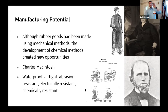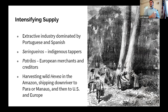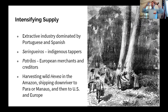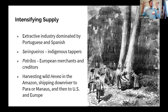As demand began to rise in these major manufacturing centers — Macintosh based in Manchester, Chaffee in Roxbury — supply began to intensify. There were a lot of connections between American material culture and consumerism, a larger Atlantic world, and several systems of slavery. One that is less often emphasized in the context of US history is Europeans exploiting indigenous labor in South America, but that was the primary source of rubber for US manufacturing needs.